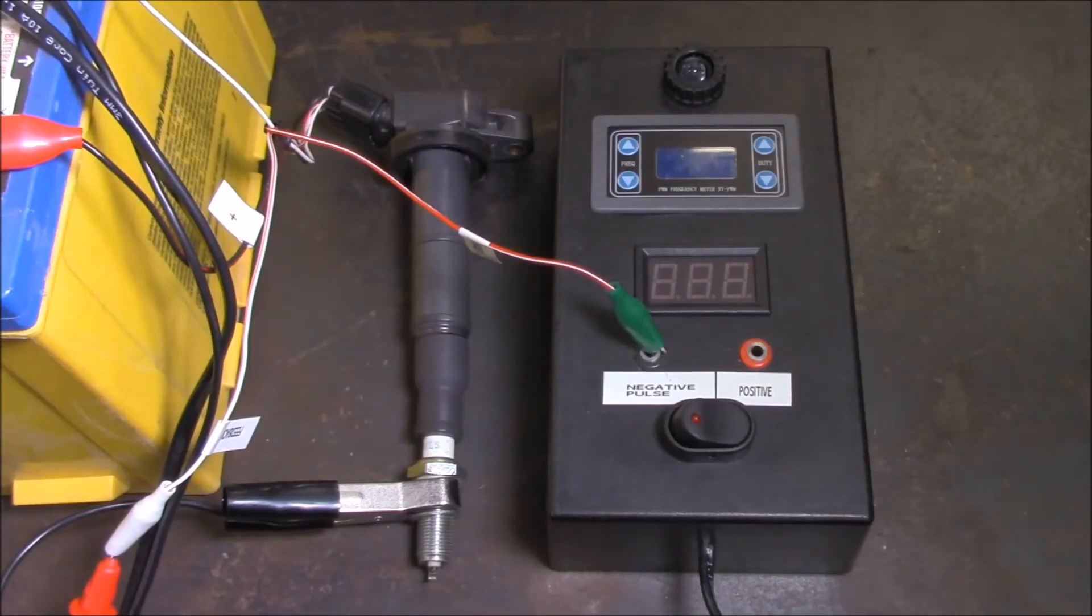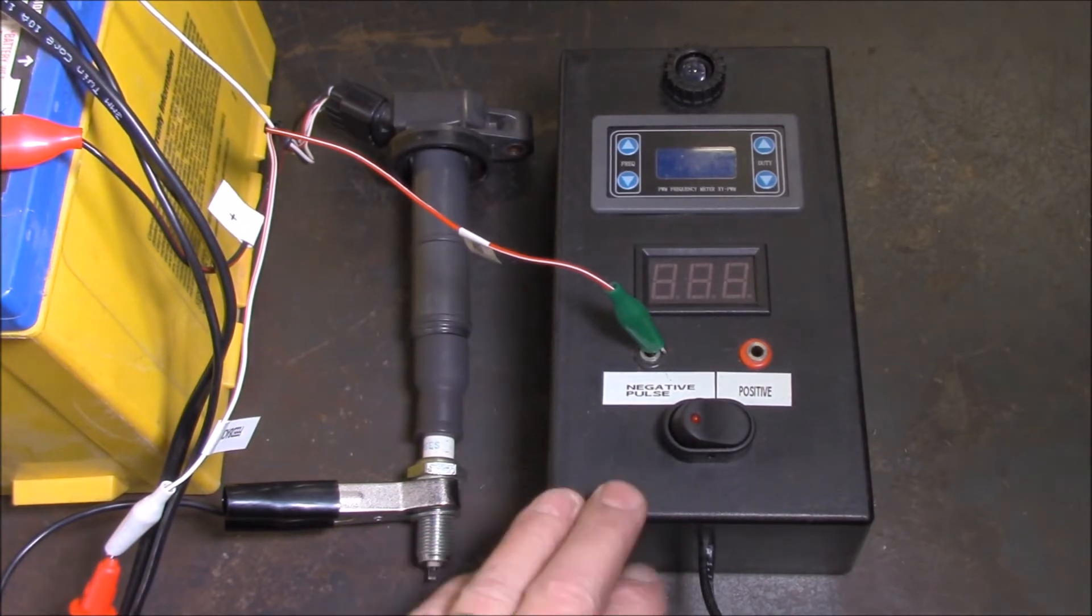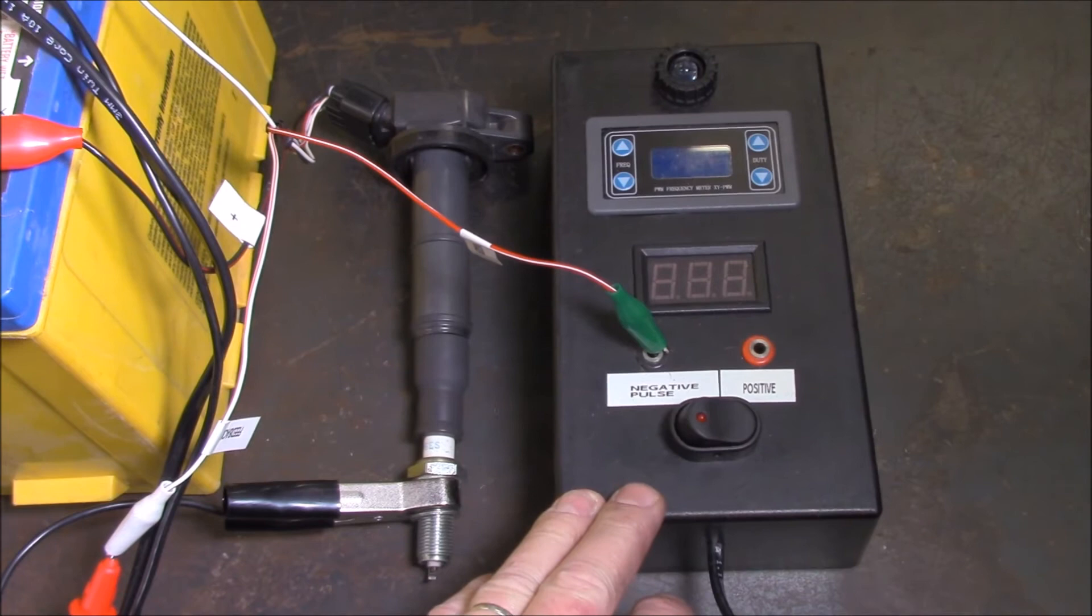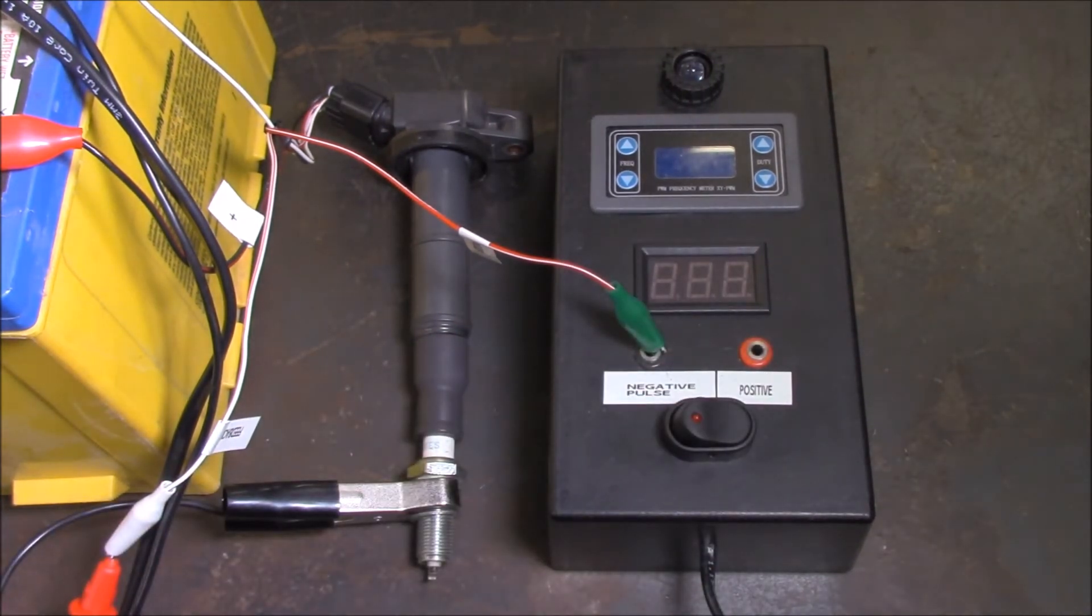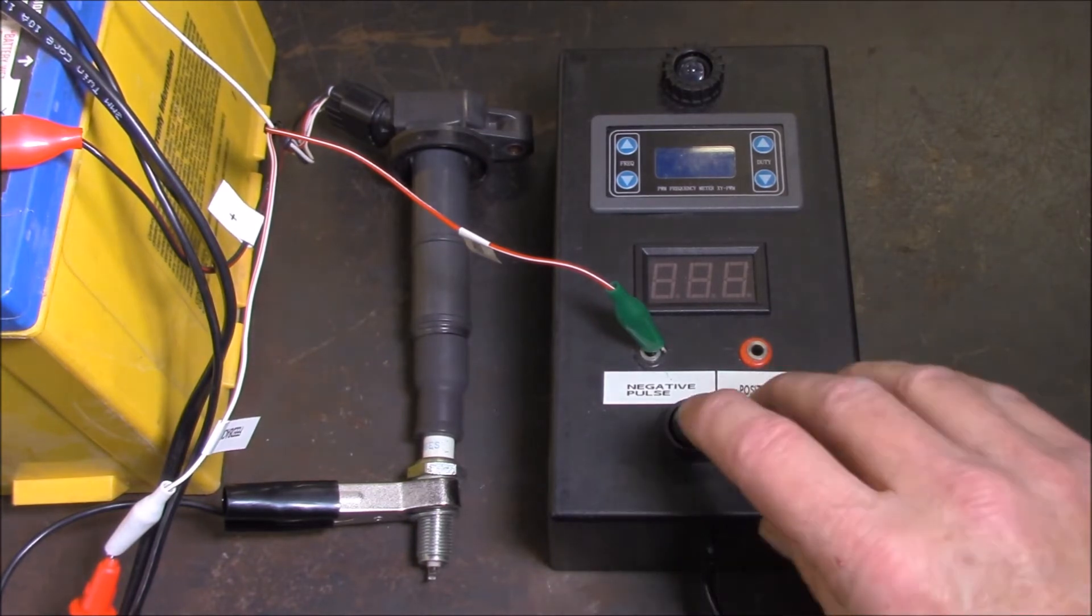Another method for testing the ignition coils can be a bench test by use of something similar to this. This is one that I've made myself just using a pulse width modulated frequency generator together with a few MOSFETs and bits and pieces inside to allow for high voltage to go through. Basically, you can check and see if you can get a pulse happening.